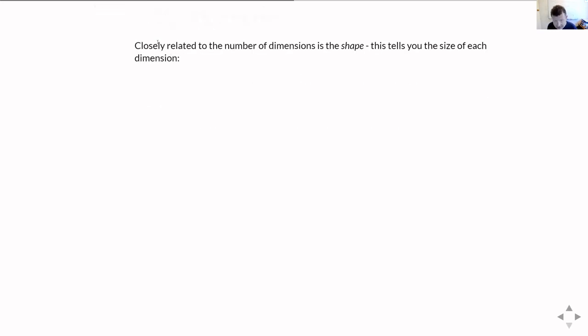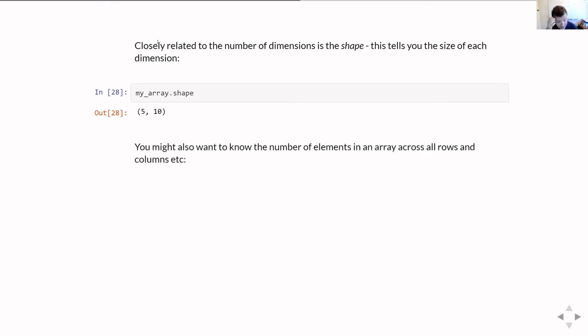And then very closely related to the number of dimensions is going to be the shape of the array. If it's a two-dimensional array, the shape is the number of rows by the number of columns. So that you get with the .shape attribute. In this case, it tells us that our array we'd created was five rows by 10 columns. You might also want to know the number of elements you've got across all the rows and all the columns. And that you get from size. So again, in this case, my_array.size is 50. Because that's five rows by 10 columns.